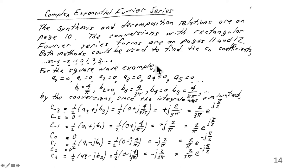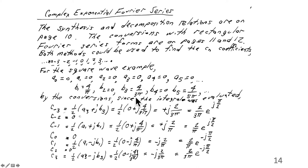For the square wave example, where a0 equals 0, a1 equals 0, and so on up to a5 equals 0: b1 is 4 over pi, b3 is 4 over 3 pi, b5 is 4 over 5 pi, and the even harmonics are 0.